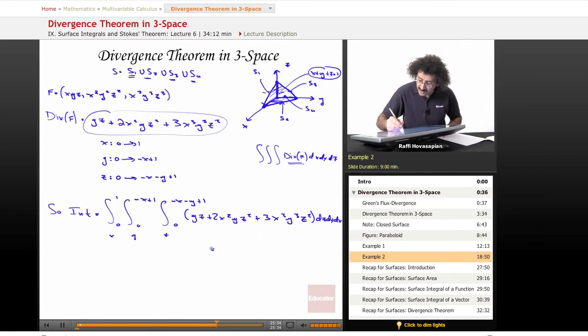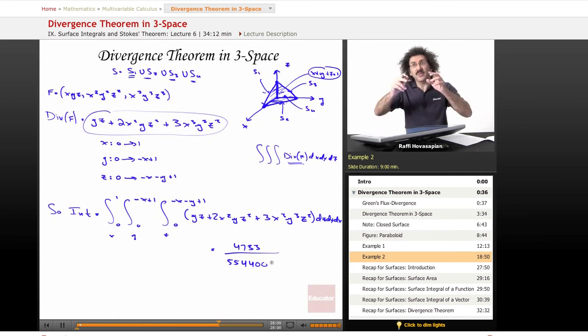When I put this into mathematical software I get some odd number, but it is a number: 4733 divided by 554400. Again we have a positive divergence, it's a very small number but it is a positive divergence. This vector field, if this were a fluid field, the fluid is leaving this volume, it's actually flowing across the surface.